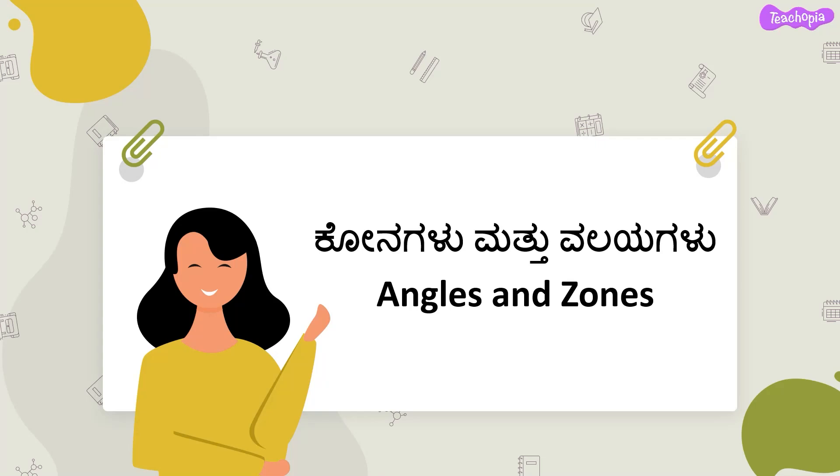An angle is formed between two lines at the point where they intersect. A line can separate a plane into two distinct regions. Let us now see how an angle is identified and the meaning of region in relation to angles.